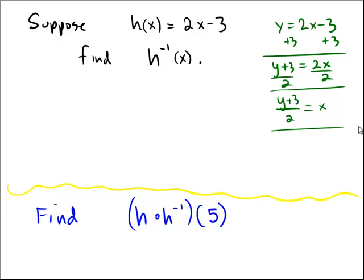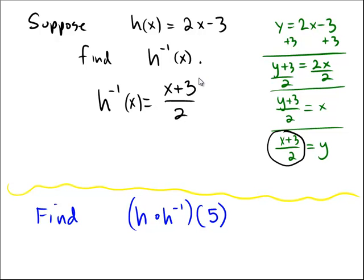And then, interchange the variables, so x plus 3 over 2 equals y. Because as an inverse function, that's really what you're doing. Inputs become outputs, outputs become inputs. So if a problem says to find h inverse of x, that's what we've done right here. This is the result that happens when you interchange x and y. So h inverse of x would be equal to x plus 3 over 2.